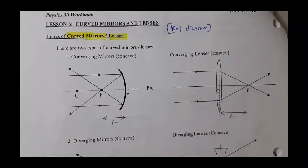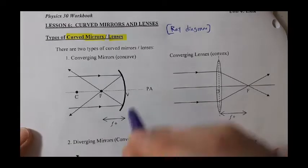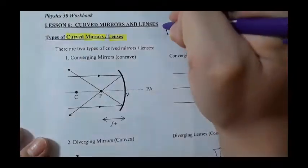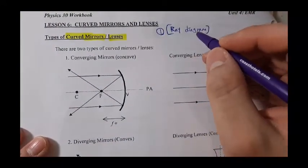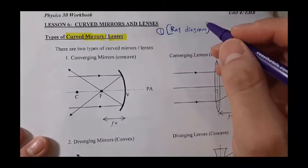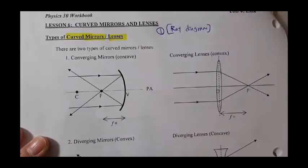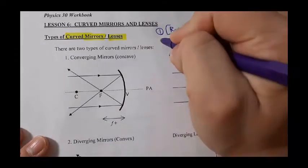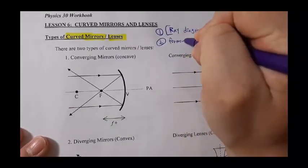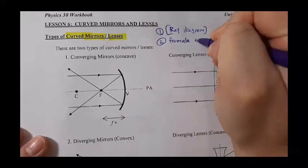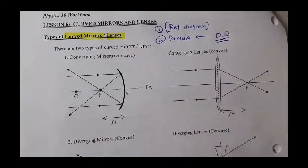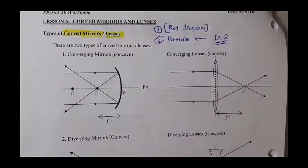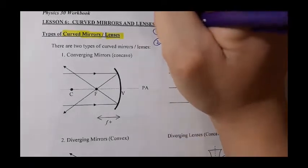So this section — lesson number six, curved mirrors and lenses and ray diagram — I'm going to break it into two parts. Part one, which is the video I'm recording right now, specifically talks about the theory part: how can we predict reflected or refracted images by using mirrors or lenses. Part two, we are going to use formulas. The formula approach is what you'll probably use a lot when facing diploma questions, because that's one of the easiest ways — it's simple algebra. However, I like to focus on part one.